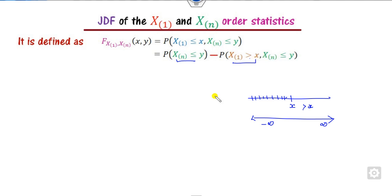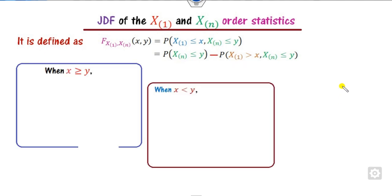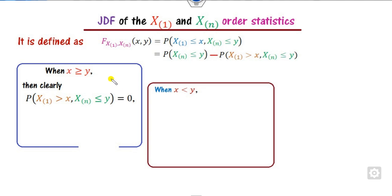Our target is to find these two values. Since y is the minimum, there are two cases: either x is greater than or equal to y, or less than y. If x is greater than or equal to y — since y is the largest element and x(1) is the first — x lies outside the ordered range, so there is no ordered pair. This probability is 0, making this term 0 as well.